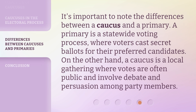It's important to note the differences between a caucus and a primary. A primary is a statewide voting process where voters cast secret ballots for their preferred candidates. On the other hand, a caucus is a local gathering where votes are often public and involve debate and persuasion among party members.